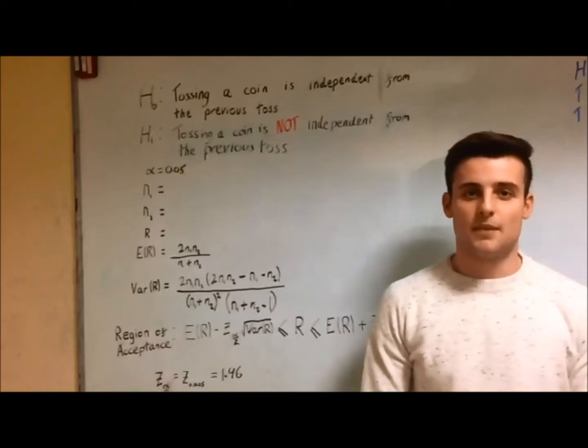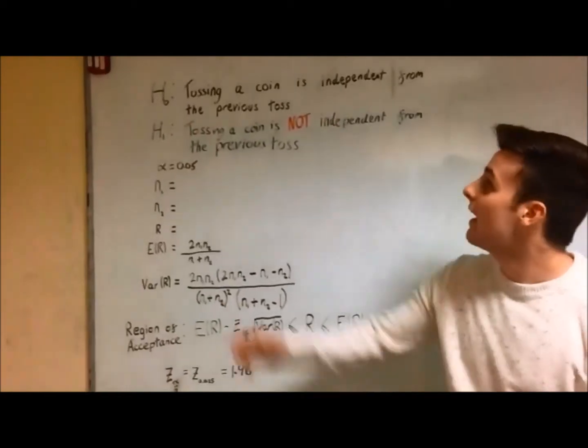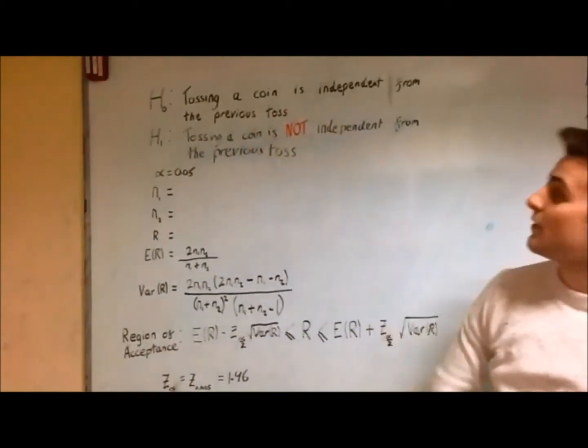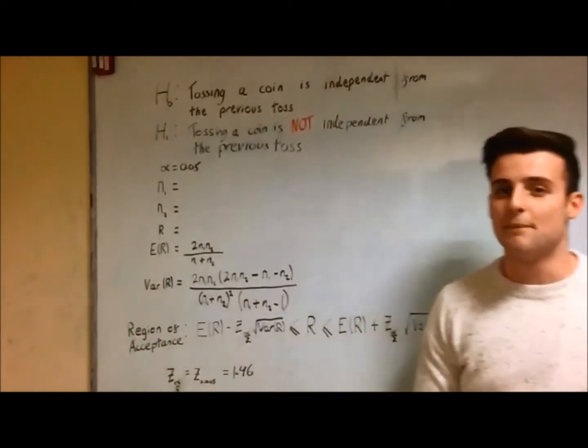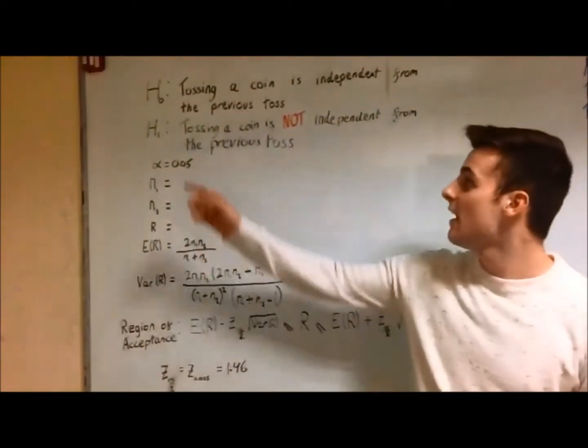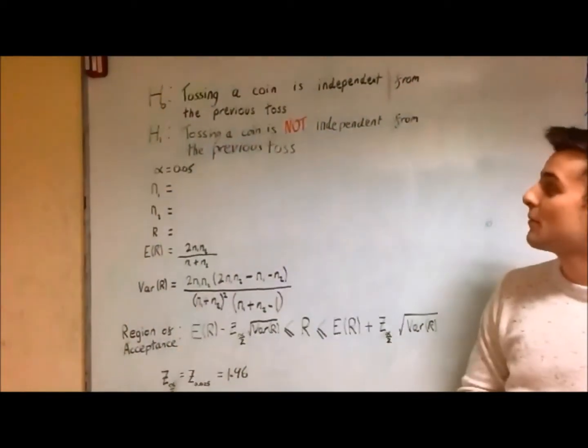Firstly, we need to make a hypothesis. The null hypothesis is tossing a coin is independent from the previous toss. This is what we would expect to happen. The alternative hypothesis is tossing a coin is not independent from the previous toss.